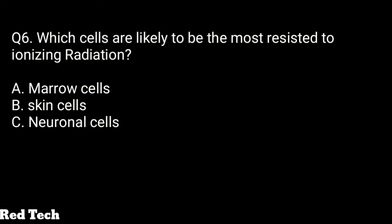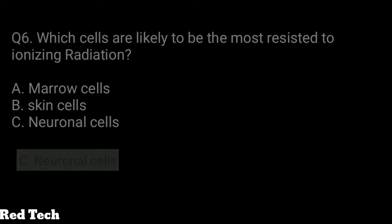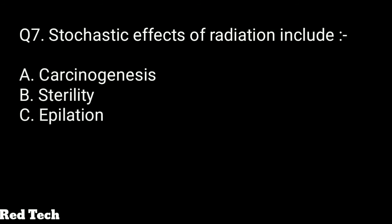Question number six: which cells are most resistant to ionizing radiation? The options are marrow cells, skin cells, or neuronal cells. The right answer is neuronal cells — they are most resistant to ionizing radiation because these cells do not undergo further division.